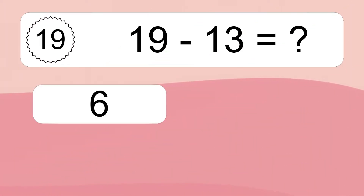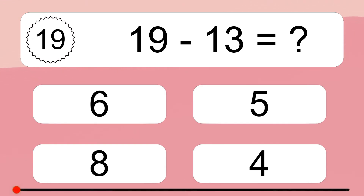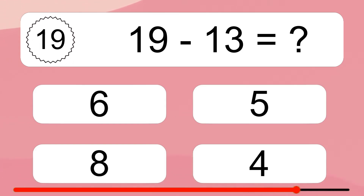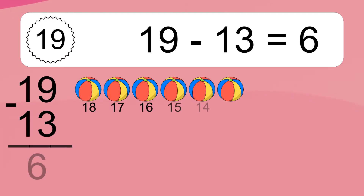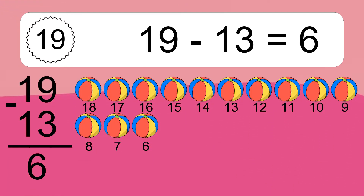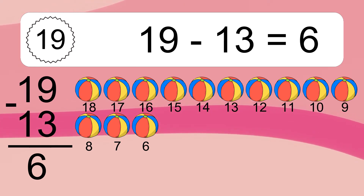19 minus 13 equals what? 19 minus 13 equals 6. Let's count it: 18, 17, 16, 15, 14, 13, 12, 11, 10, 9, 8, 7, 6.